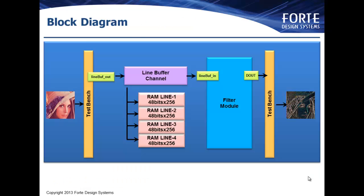This diagram shows how the line buffer is connected up to the rest of our design. It reads single values from the test bench and stores them in the memories provided. The filter module will read entire working sets from the line buffer, process them, and generate a single pixel output to another part of the test bench.